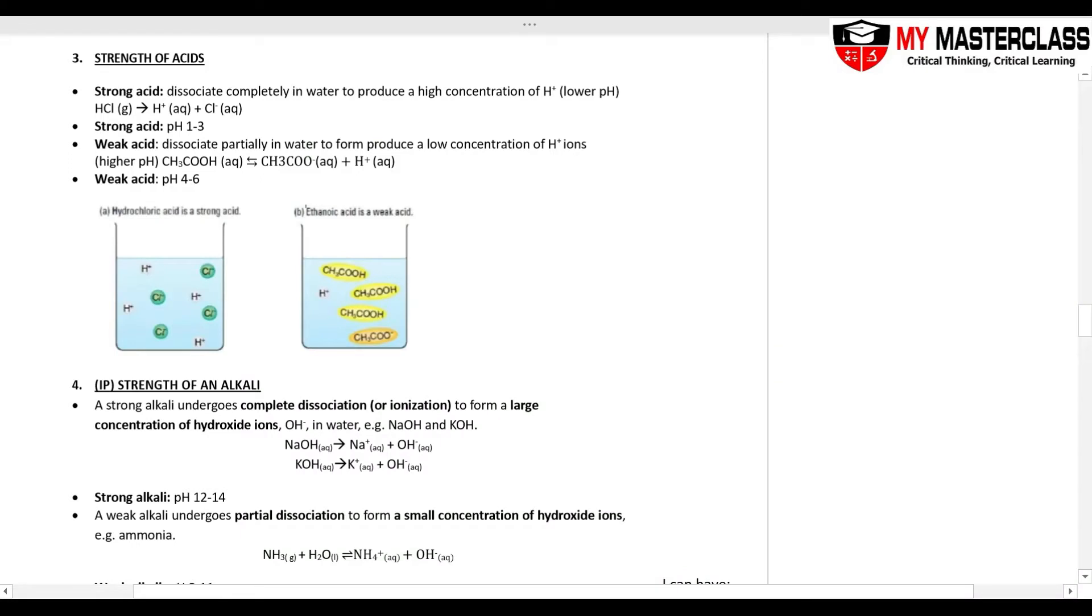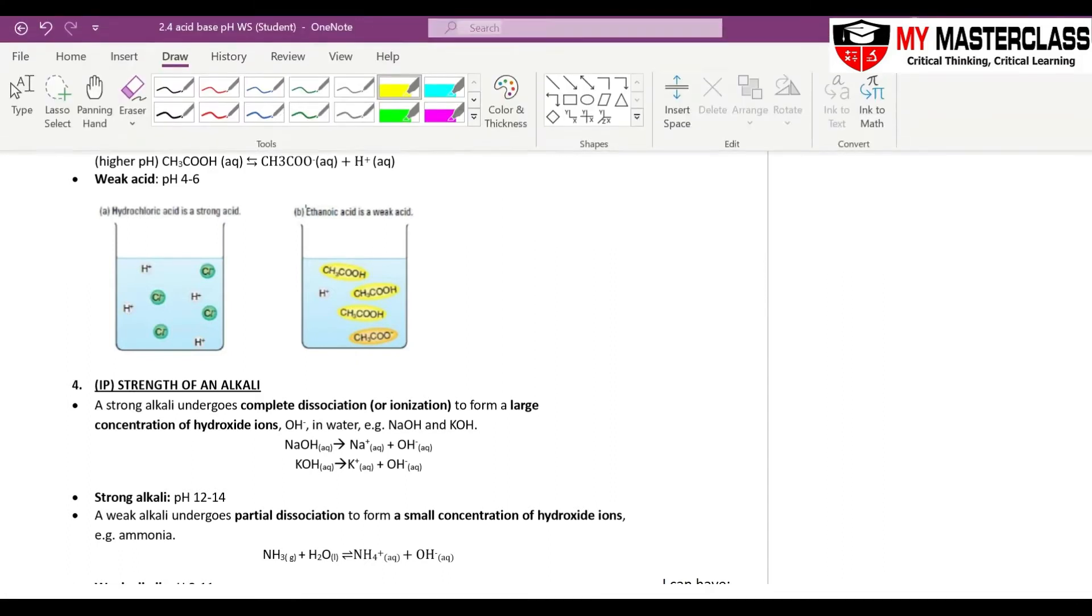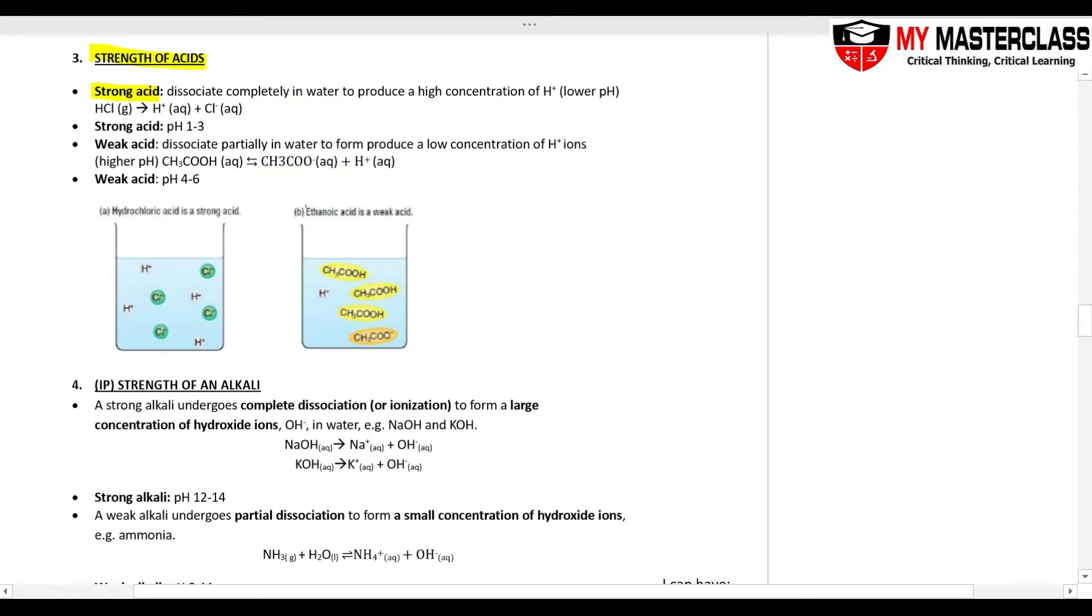So this part of your acid and basis, we are going to look at the strength of the acid. Acids, we have strong acid by definition. Strong acid dissociate completely in water to give high concentration of H+. So complete dissociation, usually we will put it in this arrow. Reaction goes to completion. So if I have 10 molecules of HCl, all will separate into H+, Cl-. This is strong acid because all dissociate, complete dissociation.